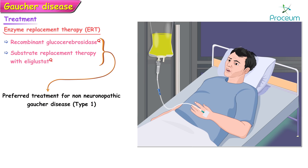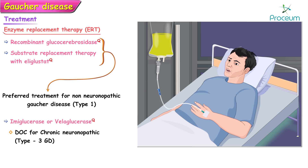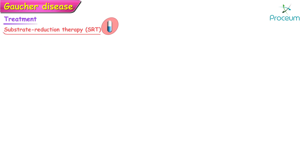Enzyme replacement therapy with imiglucerase or velaglucerase is also an option in patients with chronic neuronopathic Gaucher's disease who have visceral manifestations, and in patients at risk for Type 3 Gaucher's disease, but it is not suitable for patients with acute neuronopathic Gaucher's disease — that is, Type 2.